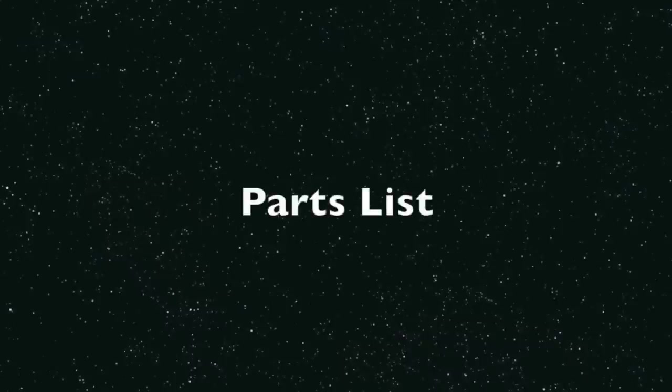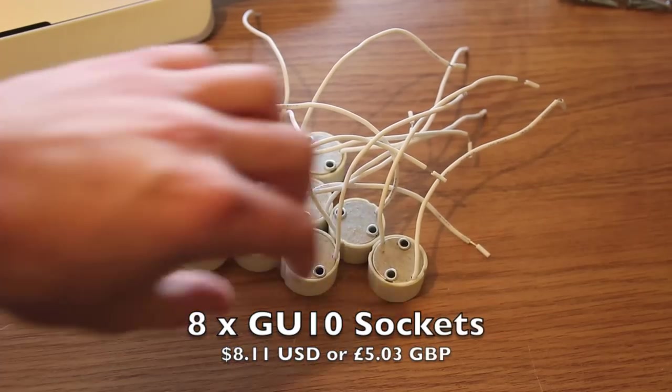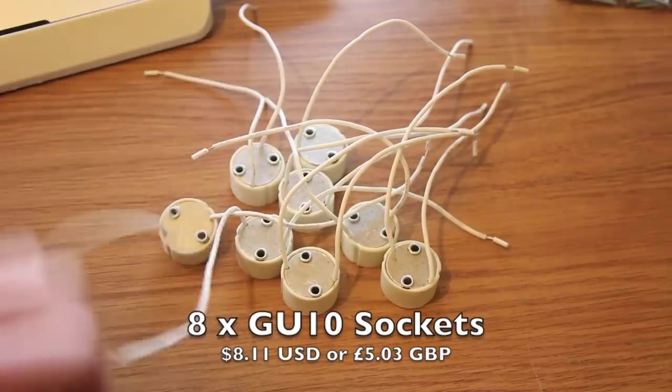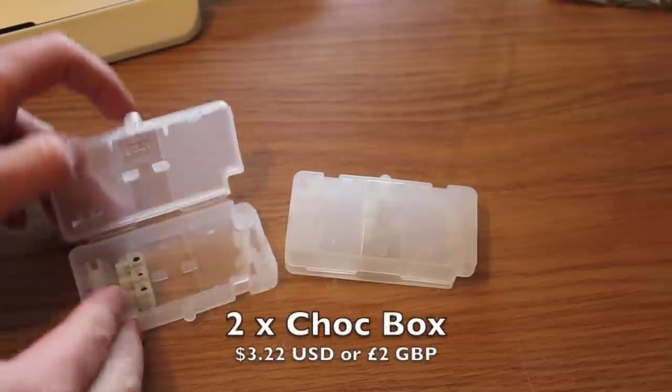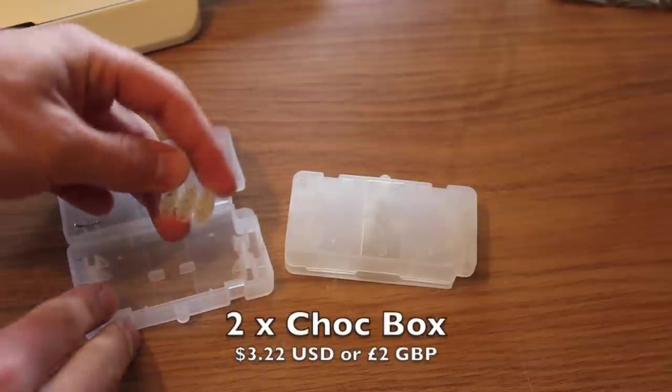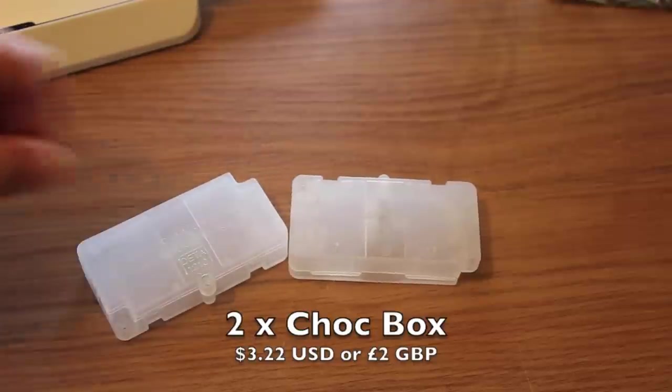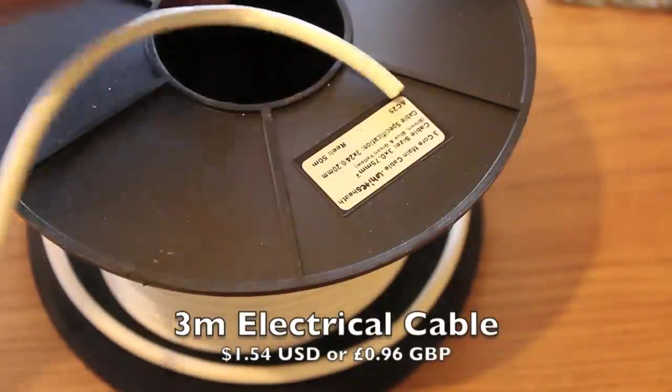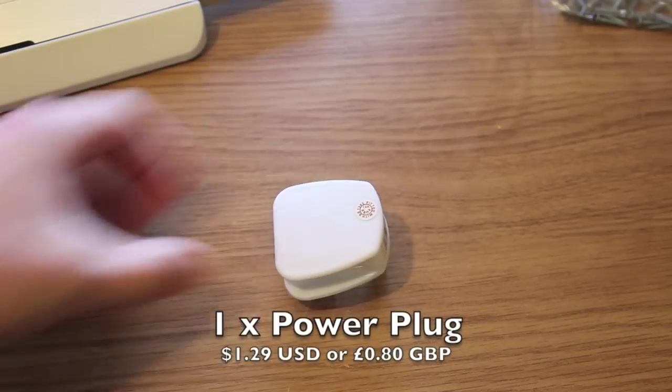And this is the parts list. First of all we need one small scrap piece of wood which should be free. Then we need eight GU10 light sockets and they will cost about $8.11 or so. Next we need two chalk boxes which are about $3.22 and they need to come with a terminal block included. Then we need about three meters of basic three core electrical cable and that will be about $1.50. Then we just need a standard power plug for about $1.29.